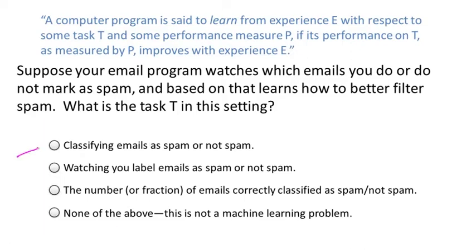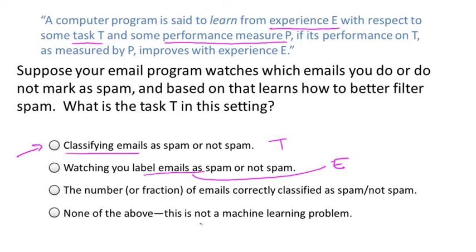The right answer is classifying emails — that is the task T. Watching you label emails as spam or not spam is the experience E, and the fraction of emails correctly classified is the performance measure P. So our system's performance on task T, as measured by P, improves after experience E.